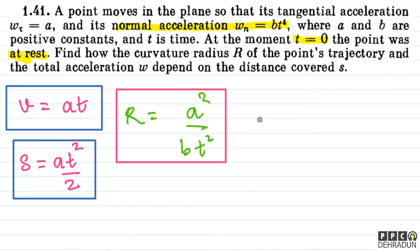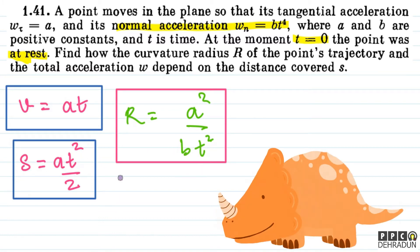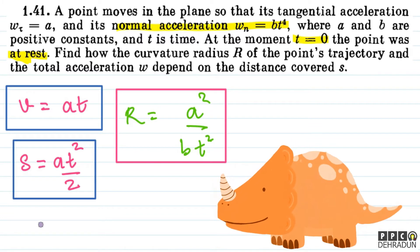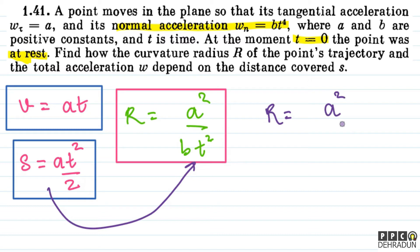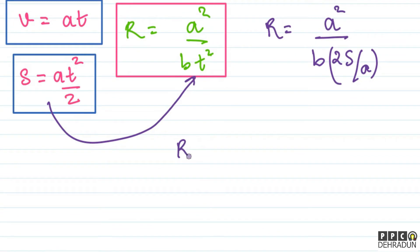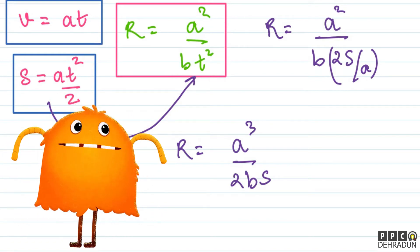Since we need R as a function of distance s, not time, we substitute t² = 2s/a (from s = at²/2). Putting this in, R = a²/(b · 2s/a) = a³/(2bs). So the curvature radius as a function of distance covered is R = a³/(2bs).